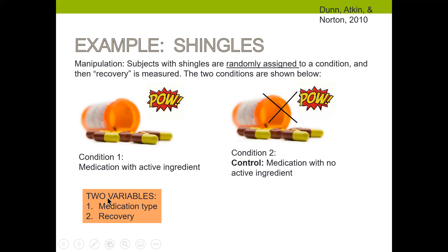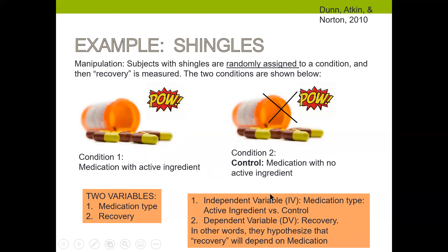The two variables are medication type and recovery. The independent variable (IV) is medication type — active ingredient versus control — and this is also our manipulation or treatment. The dependent variable (DV) is recovery. In other words, the researchers hypothesize that the variable recovery will depend on the independent variable: type of medication.